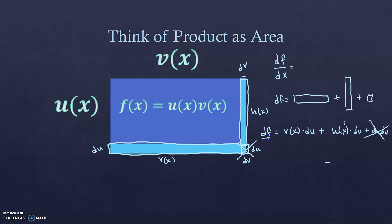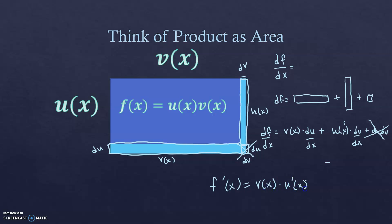Dividing everything by dx gives df/dx, which is the derivative. This yields the product rule. In Newton notation: f′(x) = v(x)·u′(x) + u(x)·v′(x). Think of it as: take the derivative of one and multiply by the other left alone, then take the derivative of the other and multiply by the first left alone.